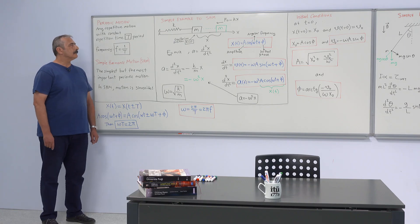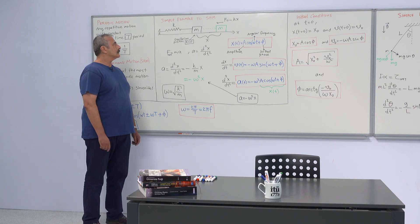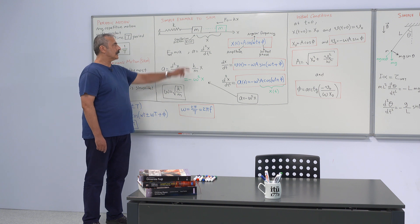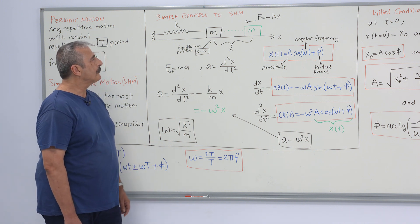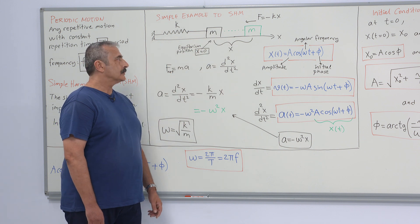One simple example to simple harmonic motion is the Hooke's spring and mass system, which mass is attached to one end of the spring and other end of the spring is fixed to some position. The mass moves on a frictionless ground.